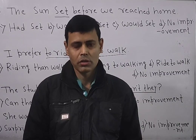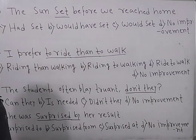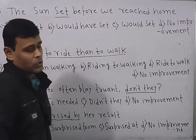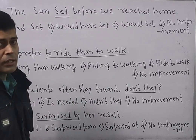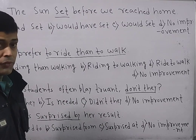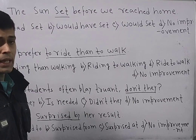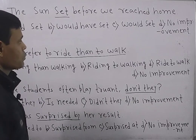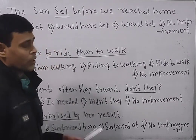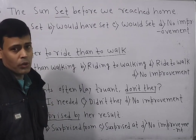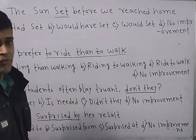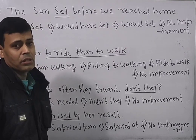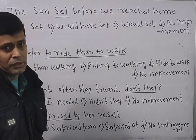Keep your focus on the board. Now look at the first question: 'The sun set before we reached home.' You need to improve the underlined section if you think sentence improvement can be made. Now be careful — whenever two actions remain in the past, the first action always qualifies for the past perfect tense and the second action for the simple past tense. That is the general rule.